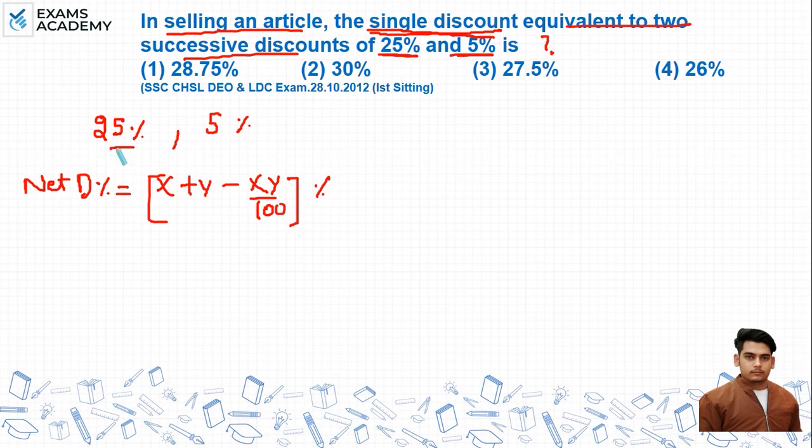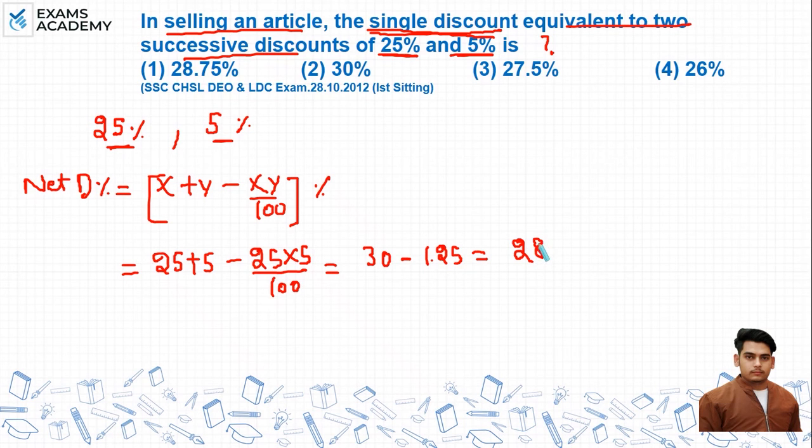So x is 25% and y is 5%. If we put the values here: 25 + 5 - (25×5)/100. So I got 30 - 1.25, that means the net discount is 28.75%. The correct option is option number one: 28.75%.